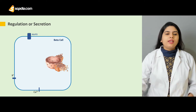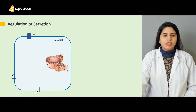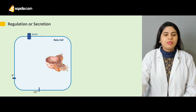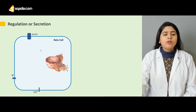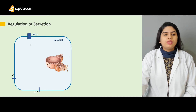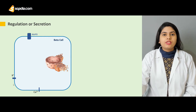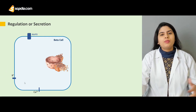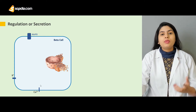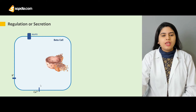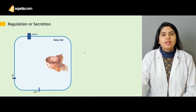Just look at this structure — this is the beta cell, which consists of a nucleus, rough endoplasmic reticulum, and Golgi apparatus. On the surface of these cells there are glucose transporters, specialized potassium-gated channels through which potassium influx and efflux takes place, and calcium channels through which calcium influx and efflux takes place.